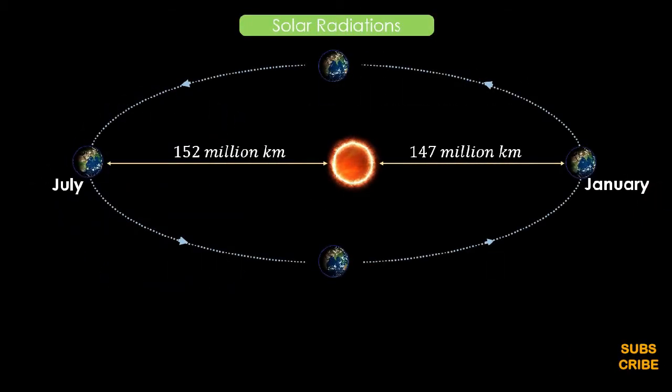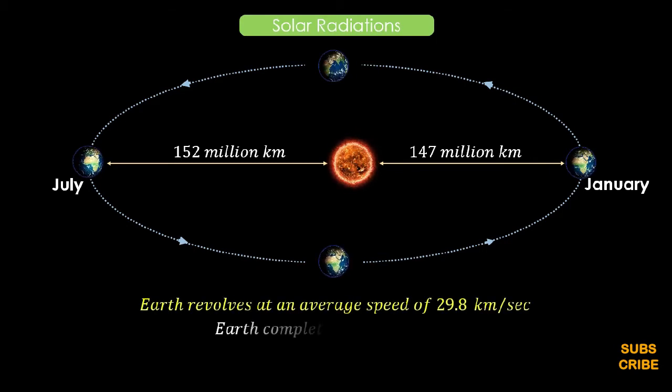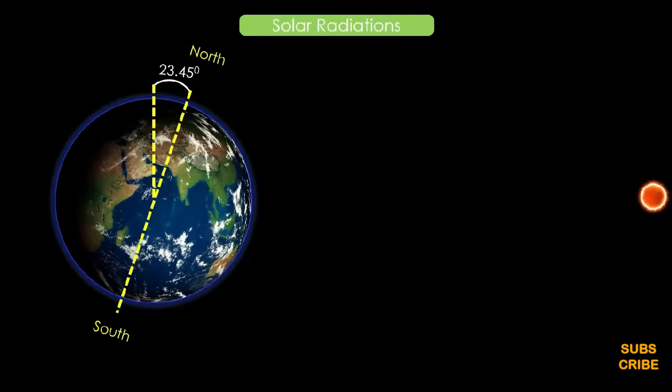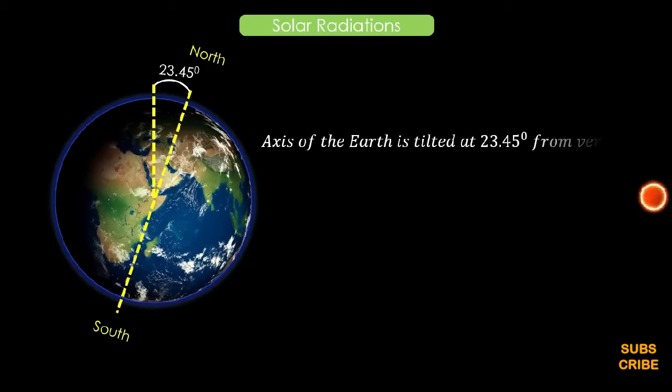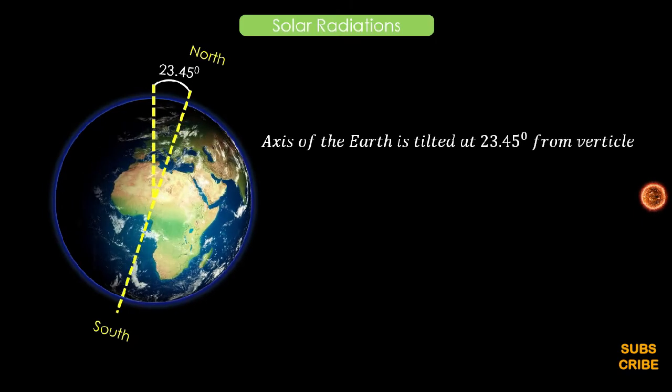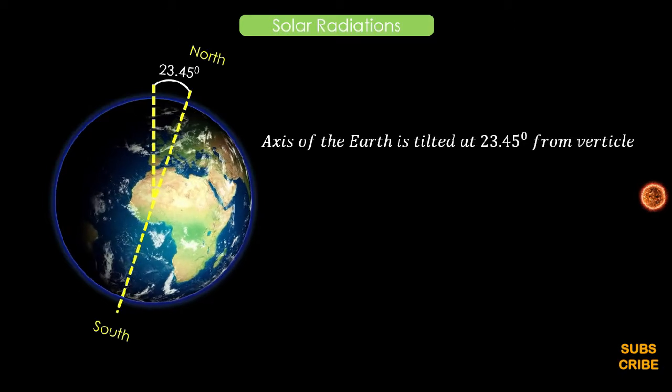Earth also revolves around the sun in an elliptical orbit, known as revolution of the earth. The earth revolves at an average speed of 29.8 kilometers per second. Earth completes one revolution in 365 days, 5 hours, 48 minutes, and 45.51 seconds, but roughly taken as 365 days, 6 hours. Further, the axis of the earth is tilted at 23.45 degrees from the vertical. Due to the tilt of the earth, the length of the day and night varies location to location.